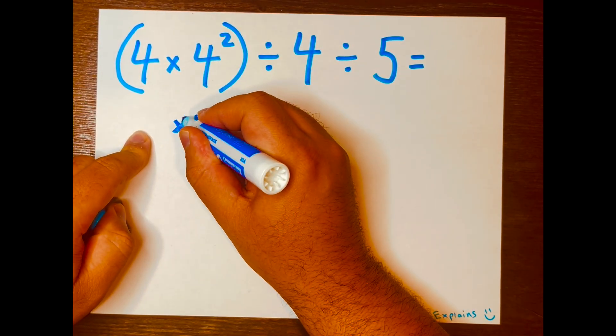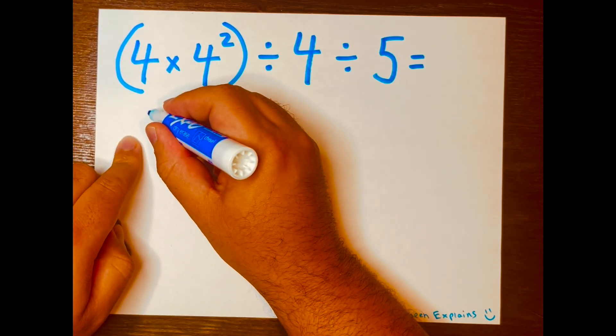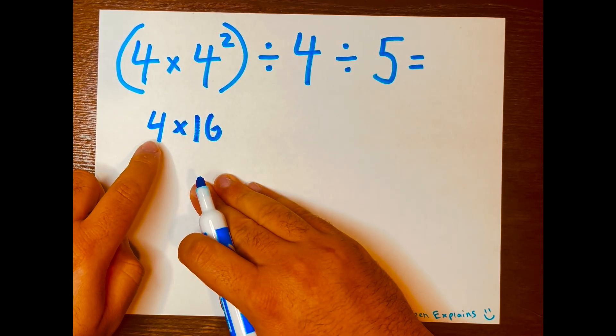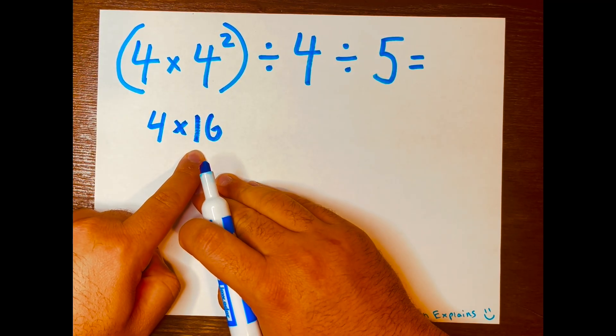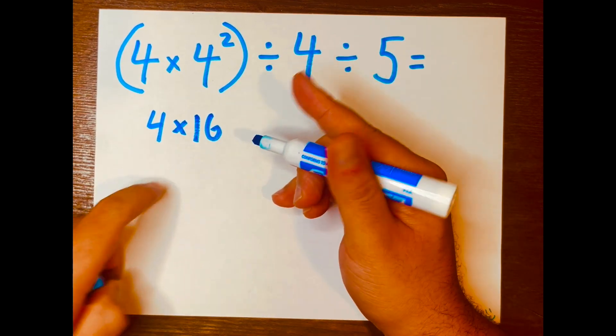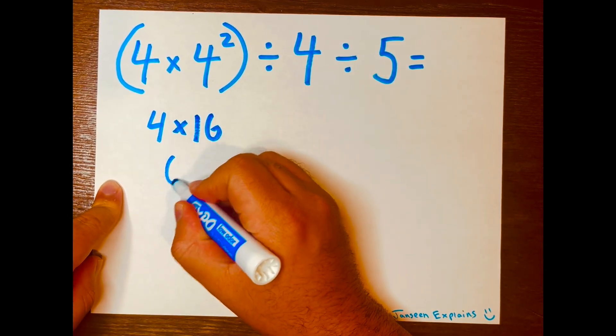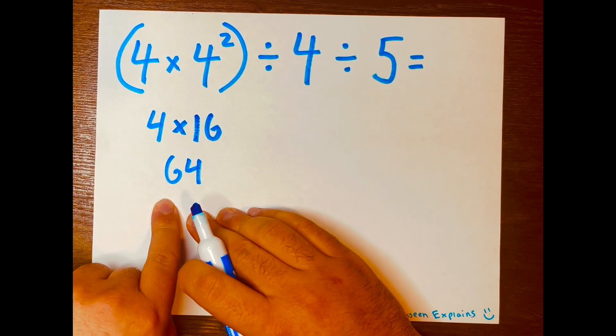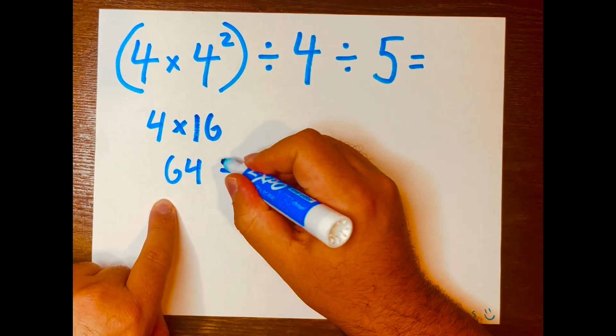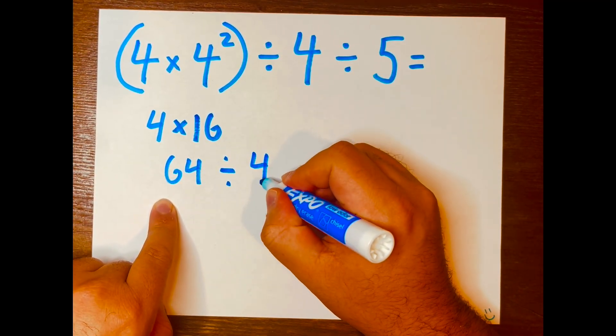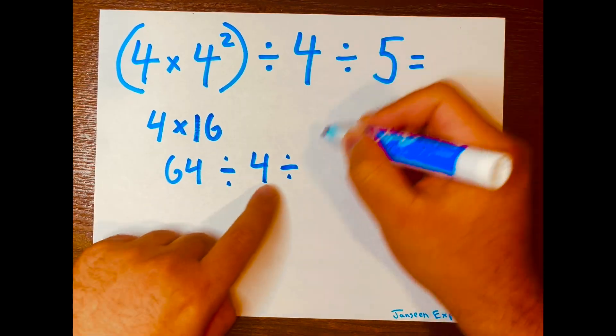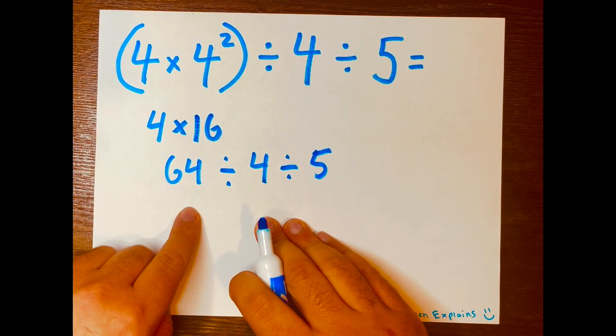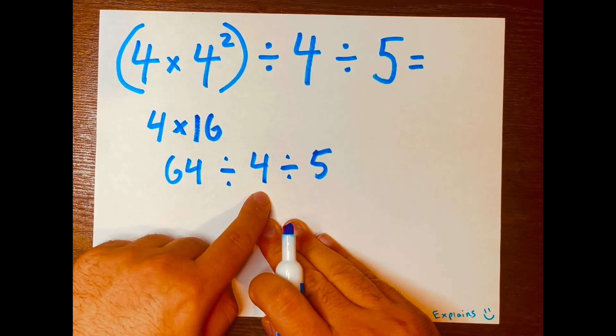Then I bring down the multiplication symbol and the four down. Now we have four times 16, and that is 64. Yes, 64. And now we bring down the division symbol, the four down, division symbol, and the five down. Now we have 64 divided by five.